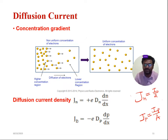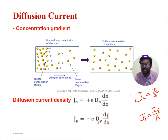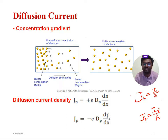Coming to Jp, this is current density due to holes, which is given by minus e (electron charge, also written as q) into capital Dp. Capital Dp leads to the diffusion constant for holes. And dp/dx is the rate of change of holes with respect to the horizontal axis.